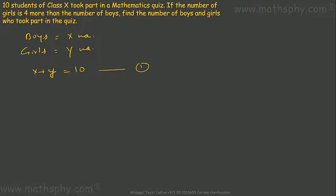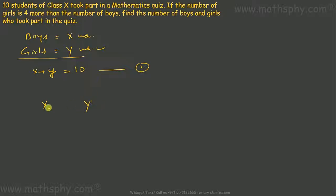If the number of girls is 4 more than the number of boys, this number y — the number of girls — is already 4 more than the total number of boys. If I equate x and y, this y is already 4 more than the number of boys. So if I add 4 here, the number of girls would give x minus y equals minus 4. That's my second equation.